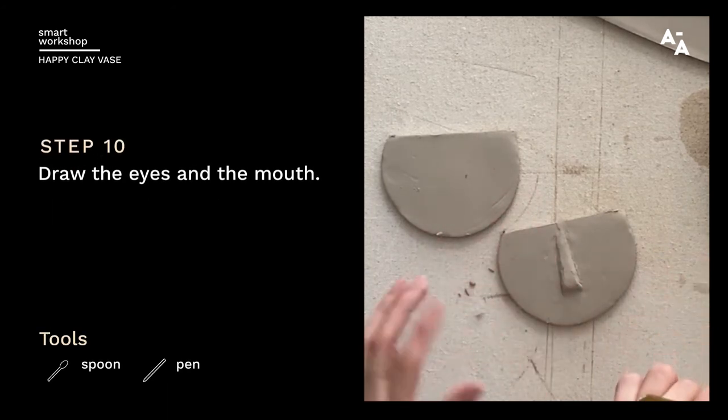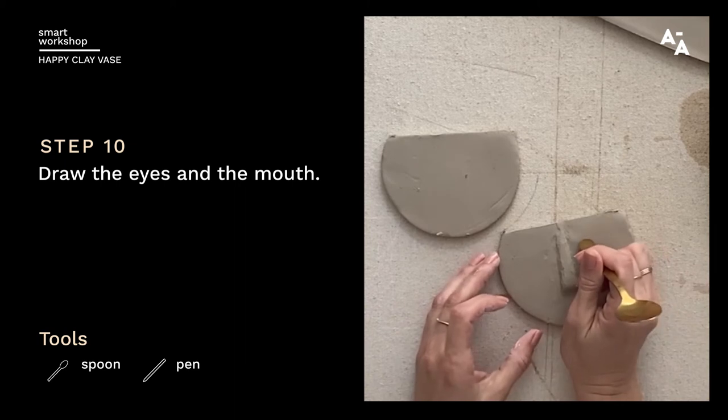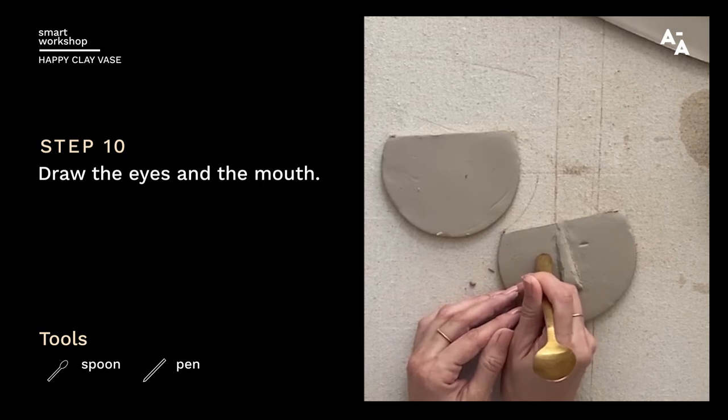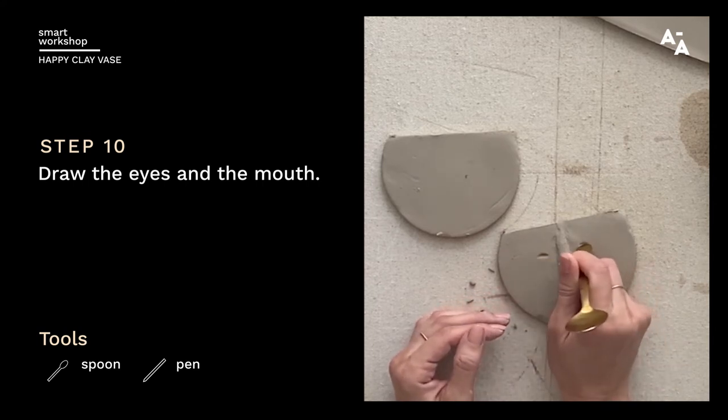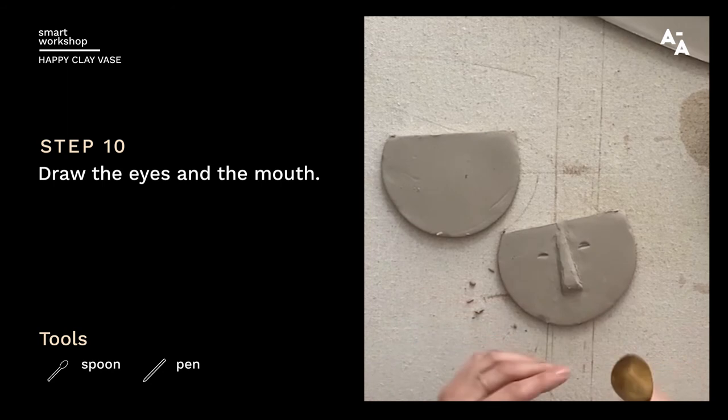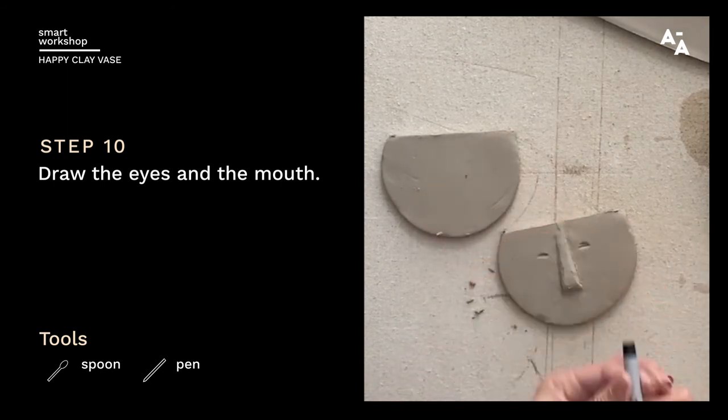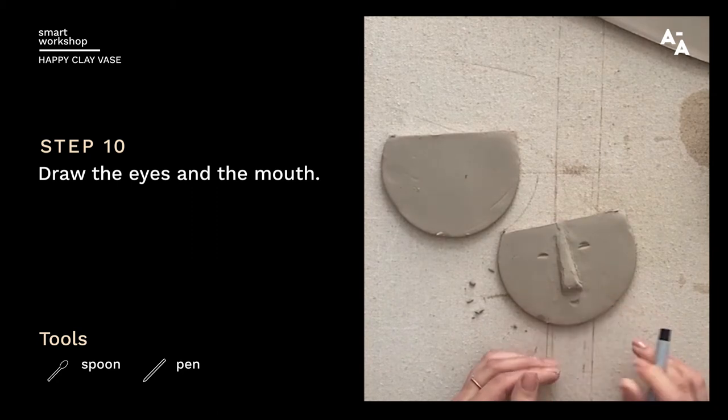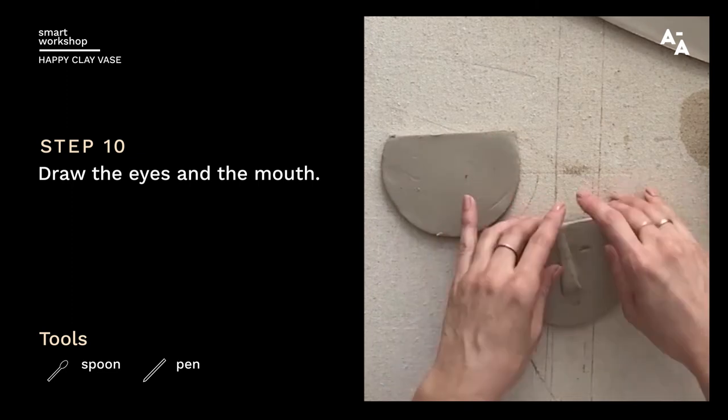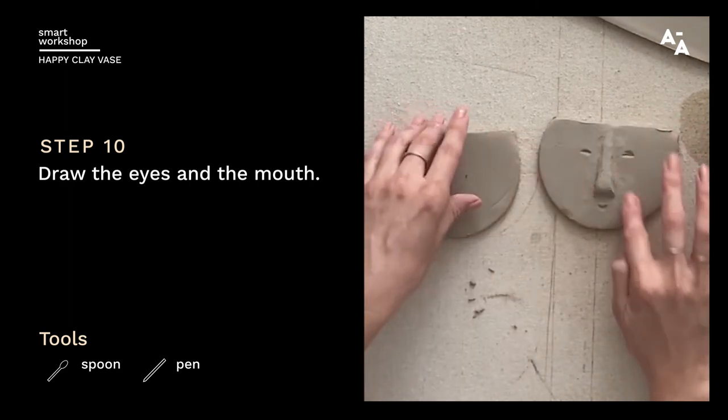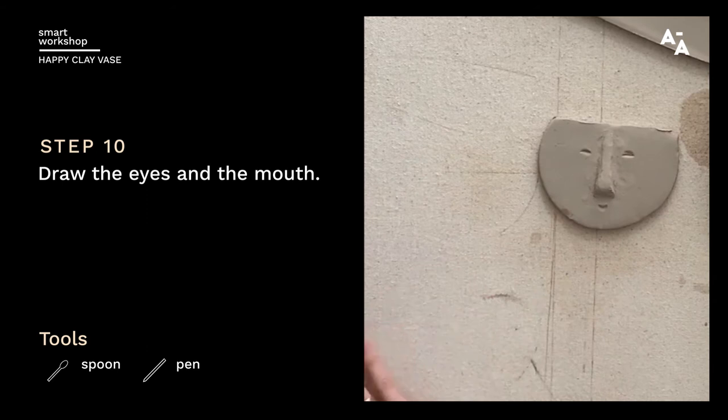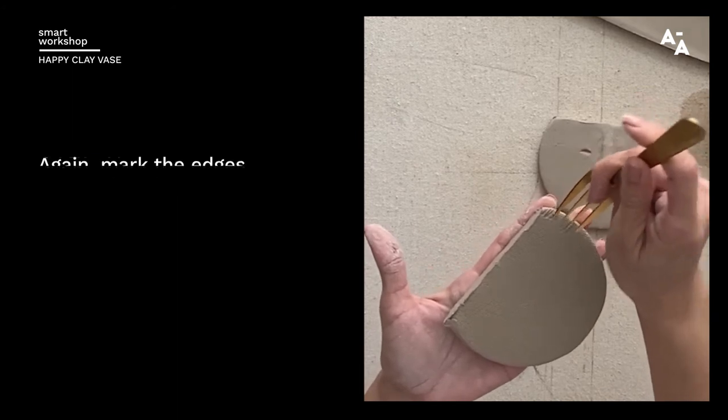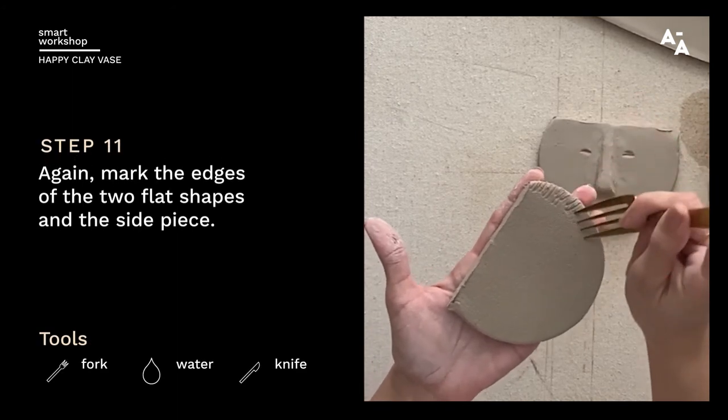So now I'm going to use the edge of my spoon to make our eyes. And then I'm going to use the butt of the pen cap, or the end of the pen, for a smile. Okay. So there we have our little guy. He's got some imperfection, but I think it's cute. You can smooth it out as much as you want. But don't forget that it's handmade.